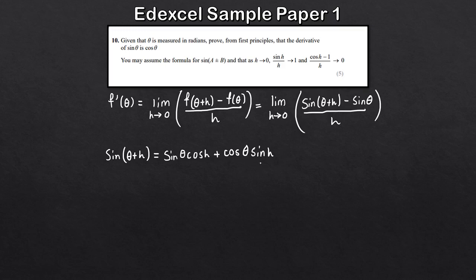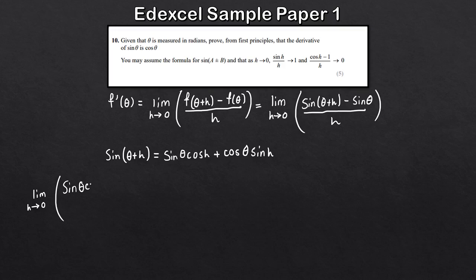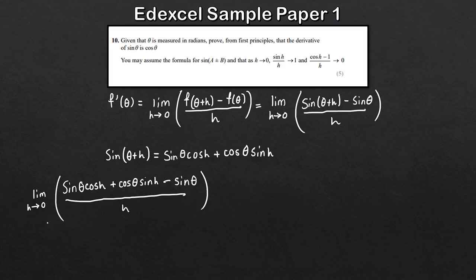Just be careful if you do A-level further maths that you don't get mixed up with hyperbolic trig functions like sinh and cosh — remember this is just cos of h and sine of h. Replacing sine(θ + h) with this expression, we take the limit as h tends to 0 of: sine θ cos h plus cos θ sine h, minus sine θ, all over h. All we've done so far is applied our compound angle formula for sine(θ + h).